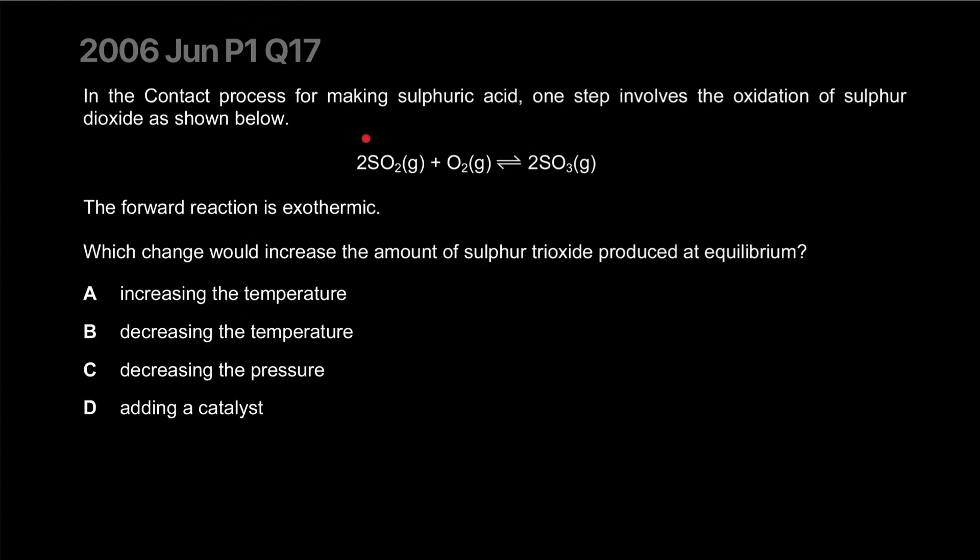In the contact process for making sulfuric acid, one step involves the oxidation of sulfur dioxide. The forward reaction is exothermic. Another way of seeing this is heat is produced. Which change would increase the amount of sulfur trioxide produced at equilibrium? Increasing the temperature will favor the side where less heat is produced, so that would be the opposite, the left hand side would be favored.